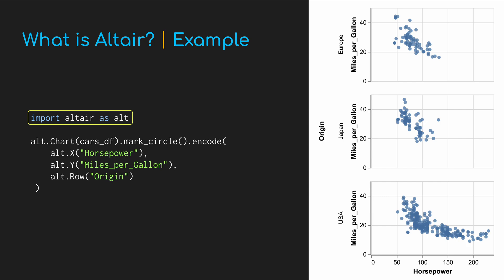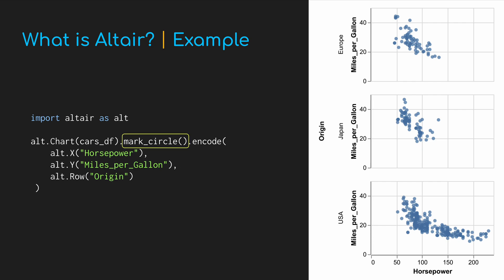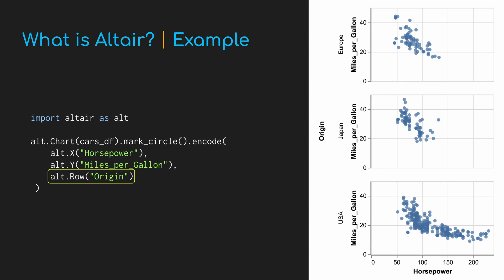Start by importing Altair, and then wrap our cars data frame in an Altair chart. Method chaining syntax is used to specify that we want to plot circles. Altair uses the concept of encoding to map data columns to mark properties like position, color, and size. Here we're saying we want the x-position of the circles to correspond to the horsepower column, the y-position to the miles per gallon column, and the subplot row to the country of origin column.